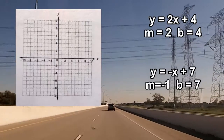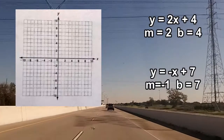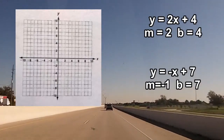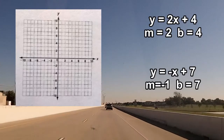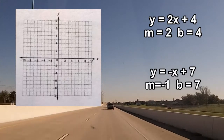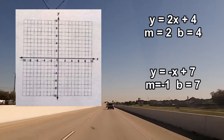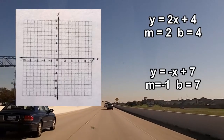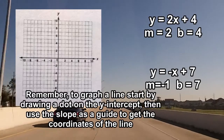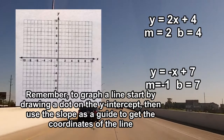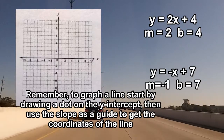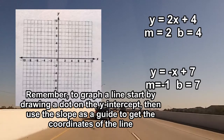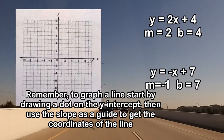In the linear equation y equal 2x plus 4, the slope would be 2 and the y-intercept would be 4. In the equation y equal negative x plus 7, the slope would be negative 1 and the y-intercept would be 7. Remember, to graph a line, start by drawing a dot on the y-intercept, then use the slope as a guide to get the coordinates for the rest of the line.